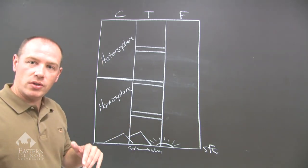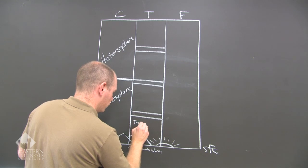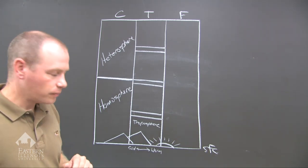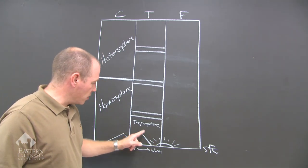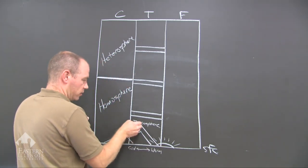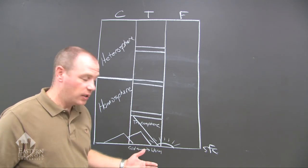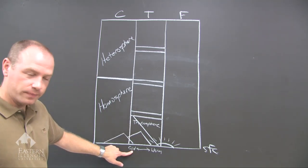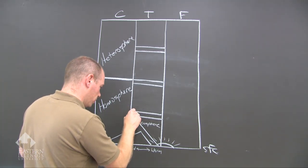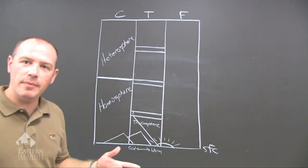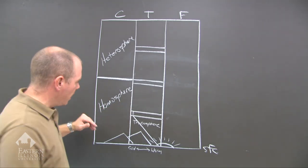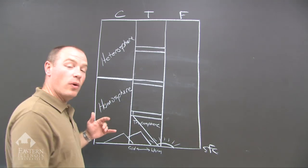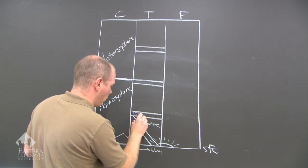The shell that we live in closest to the surface is called the troposphere. The temperature in this shell decreases with altitude. On the graph, the temperature at the surface is warm, and when we get to the top of the troposphere, it gets cold. Then temperature stays relatively the same as we increase in altitude, and when it doesn't change very much over a distance, we call that a pause — in this case, the tropopause.